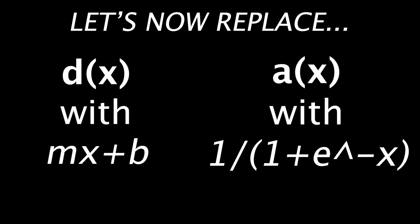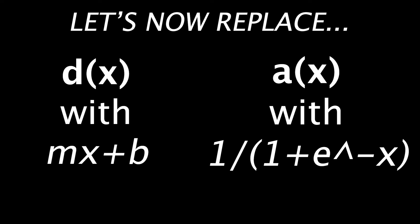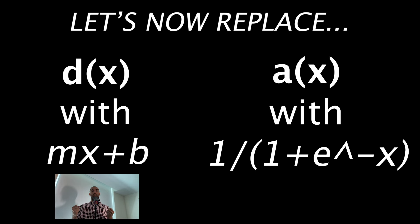Let's take this one step further. Let's now replace D of X with the function MX plus B. And let's replace A of X with the function 1 over 1 plus E to the negative X. This linear function represents the dendrite processing the input received by the neuron. This sigmoid function represents the axon or output side of the neuron.